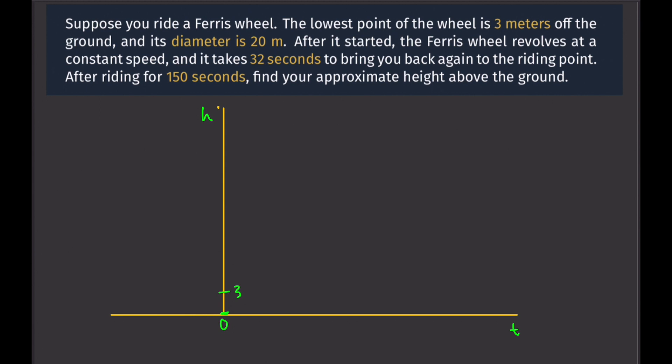Now, the diameter of the wheel is 20 meters. Let's draw the wheel. That could be the wheel. Maybe that's not to scale. Say this is the center of the wheel. Now, because the diameter is 20, that means that the radius is 10. That's 10. Therefore, this point right here is 13 because the lowest point is 3. Add 10. That's 13.